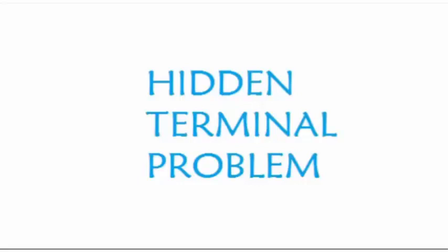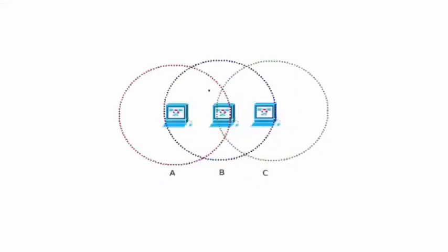Now, we will discuss about hidden terminal problem. As we can see, there are three access points, A, B and C. The transmission range of A reaches only till B. Similarly, transmission range of C reaches till B. And transmission range of B reaches both A and C.